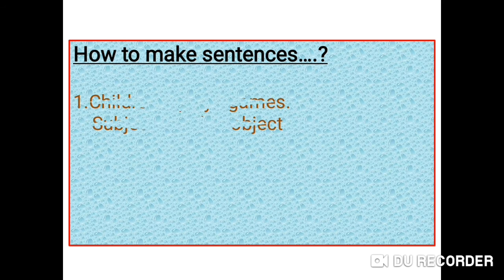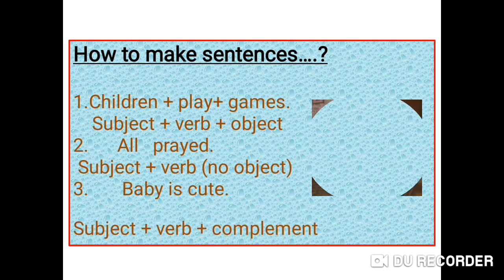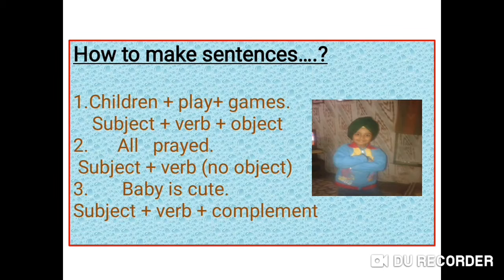First, take some words, then arrange them, and see whether they form any meaning — as can be seen in these examples. Sometimes an object is necessary, sometimes a sentence can be formed without an object, and sometimes with a complementary word. But in all these sentences, two things are common: one subject and one verb. Subject and verb both are very necessary.